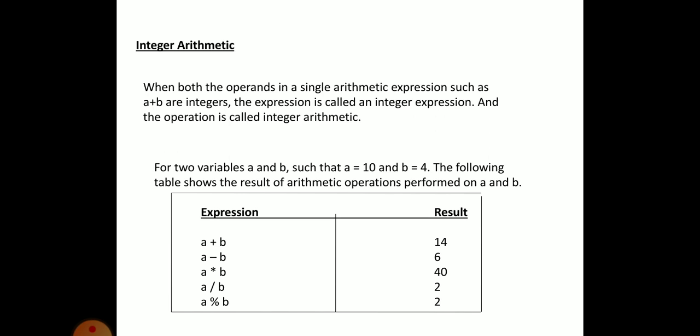For example, if two variables a and b are integers with a equal to 10 and b equal to 4, then a plus b gives 14, a minus b gives 6, a multiplied by b gives 40, a divided by b gives 2, and a modulo b gives 2. These are our familiar arithmetic operations. When both operands are integers, the operation is called integer arithmetic, and it always results in an integer value.